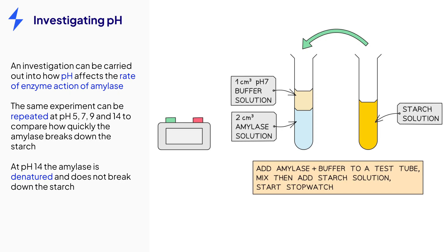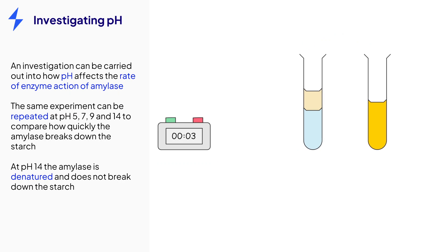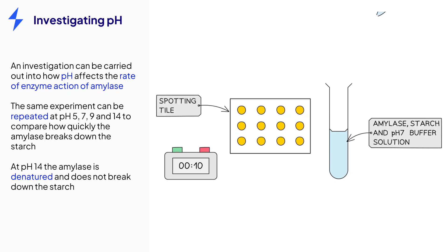When the experiment is ready to start, the contents of the two tubes are mixed together and a timer is immediately started. At this point, the amylase enzyme will start breaking down the starch into maltose. After 10 seconds, use a pipette to transfer a couple of drops of the starch and amylase solution into the first well of the spotting tile. At this point, the color of the iodine should change to blue-black because the starch has not yet been fully broken down.